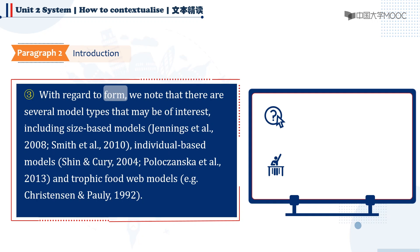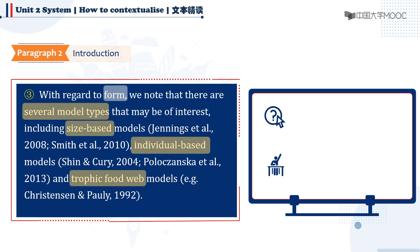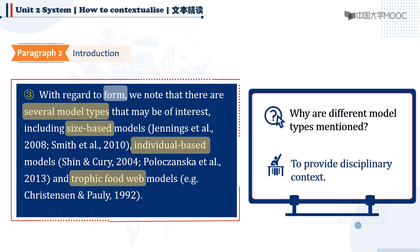In this sentence, the authors wrote: 'With regard to form, we know that there are several model types that may be of interest, including size-based models, individual-based models, and trophic food web models.' What immediately captures our attention is that this sentence includes different types of models developed in the previous studies. What is the purpose of doing that? Actually, these different models serve as a disciplinary context for the present paper.